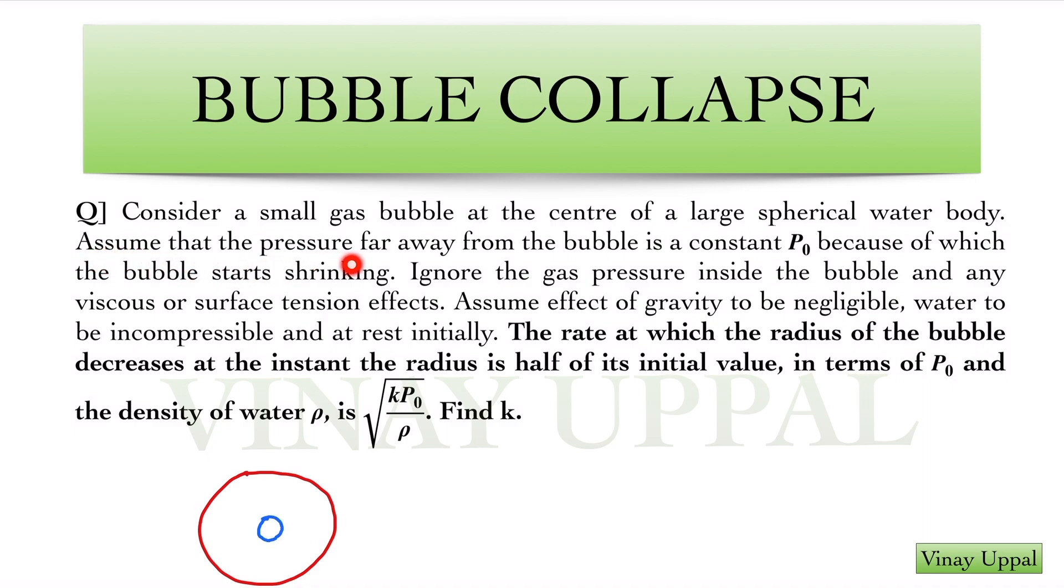Assume that the pressure far away from the bubble is a constant P0 because of which the bubble starts shrinking. The pressure far away here is P0. Ignore the gas pressure inside the bubble and ignore any viscous or surface tension effects. Assume effect of gravity is also negligible and water is incompressible and at rest initially.